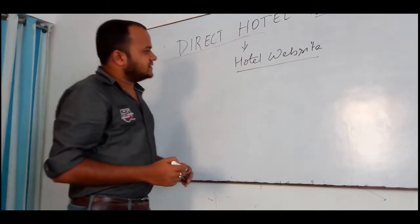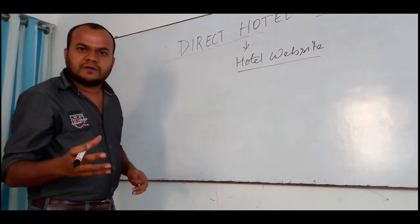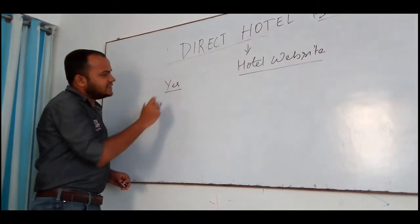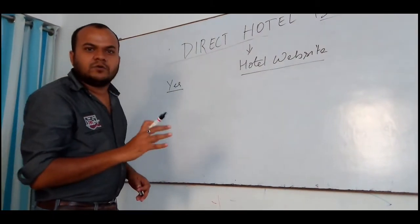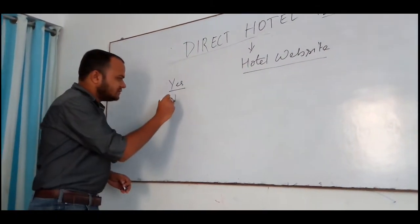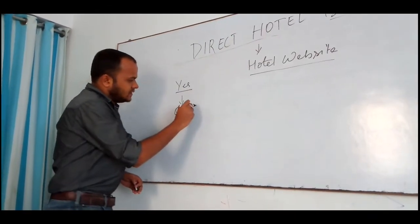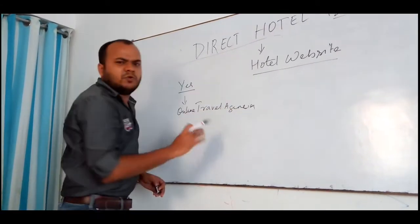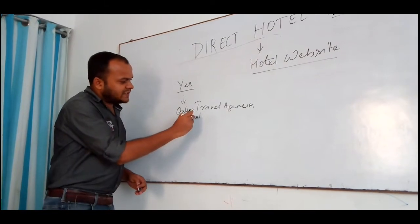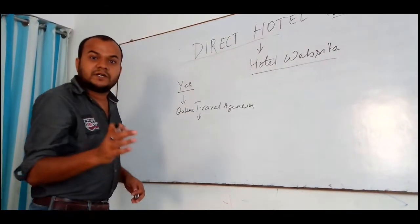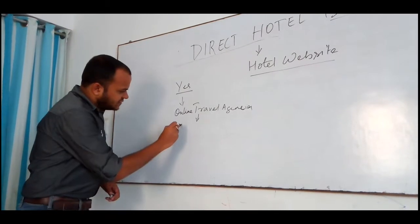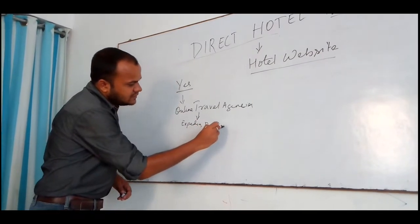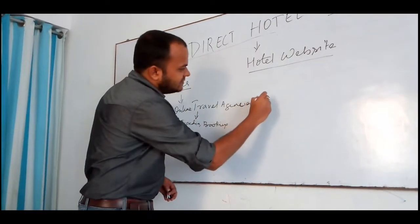So the next question which arises is: is there any other available option for hotel booking? The answer is yes. There is an available option for hotel booking, and that is OTAs — Online Travel Agencies. These online travel agencies are bigger players, meaning they have tons of hotels under their belt for which they provide hotel bookings through their own website. Expedia and Booking.com are some examples of OTAs.